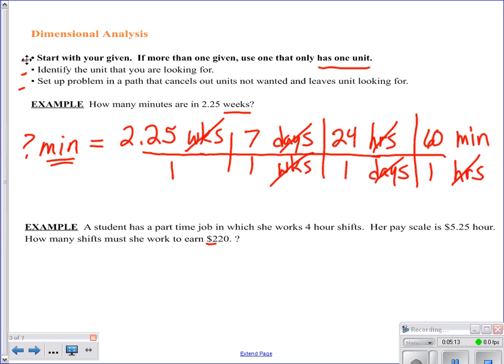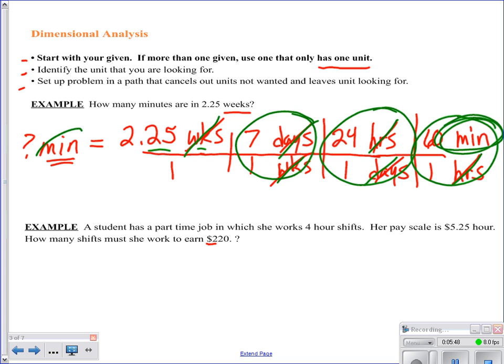Before we solve this, let's look at why this is valid. All I'm doing is taking this quantity, this number, and this unit, and I'm multiplying it times one every single time. These are all equalities. Seven days is exactly the same thing as a week. 24 hours is exactly the same thing as a day. So all I'm doing every time is just multiplying it by one. So that's why it's valid to do this. We saw that our units canceled the way we liked. What are we left with? Minutes. Yippee. That's what we're looking for. So we know that we set it up right.